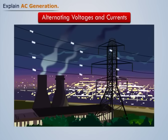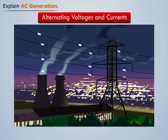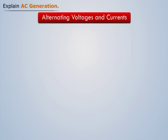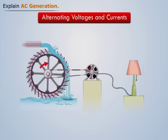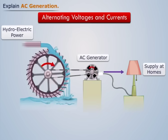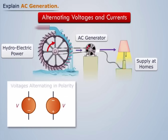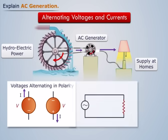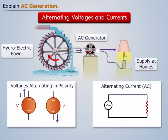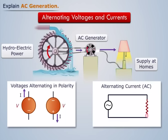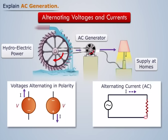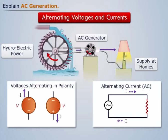AC is the form in which electric power is delivered to businesses and residences. Most sources of electricity like rotary electromechanical generators naturally produce voltages which are alternating in polarity, reversing positive and negative over time and switching current direction back and forth. This kind of electricity is known as alternating current.